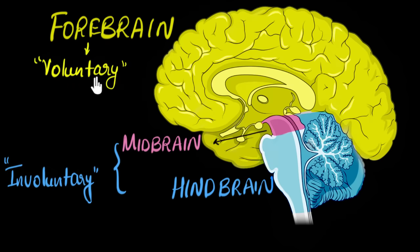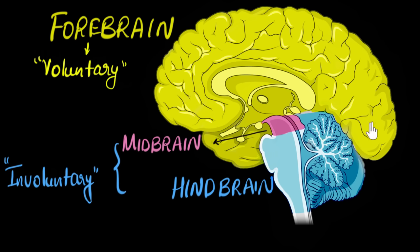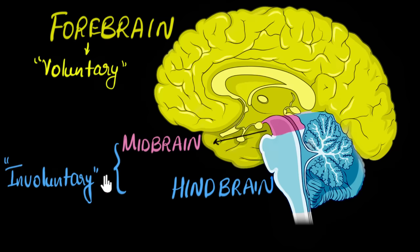When I say voluntary, think about all the actions that you carry out consciously by thinking about them — like taking a walk, talking to someone, or deciding to watch this video about brains. All of that is from your forebrain. When I say involuntary functions, there are some functions happening in your body that you're not in control of — for example, your heart beating or your digestion. Those are mostly taken care of by your midbrain and the hindbrain.